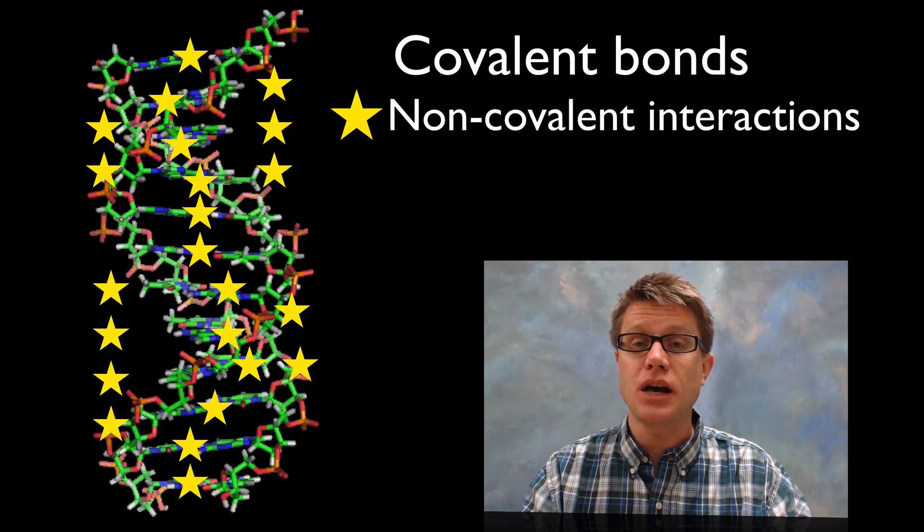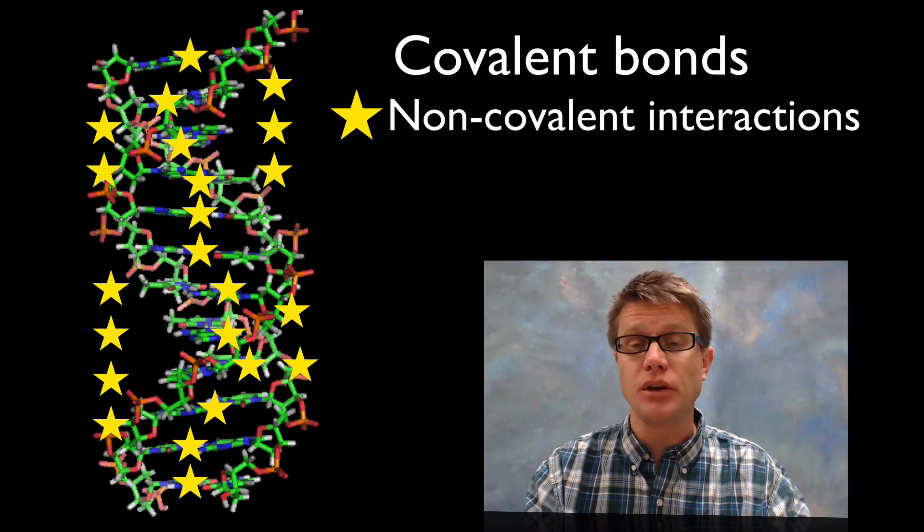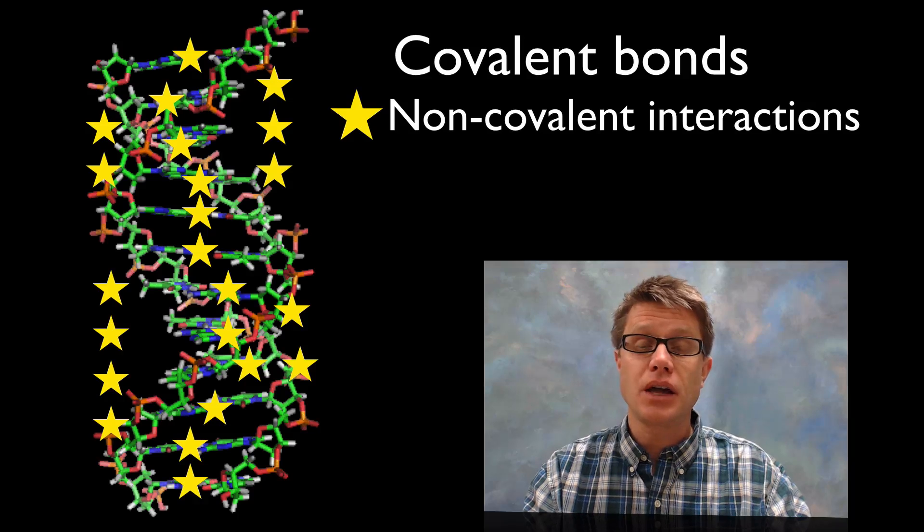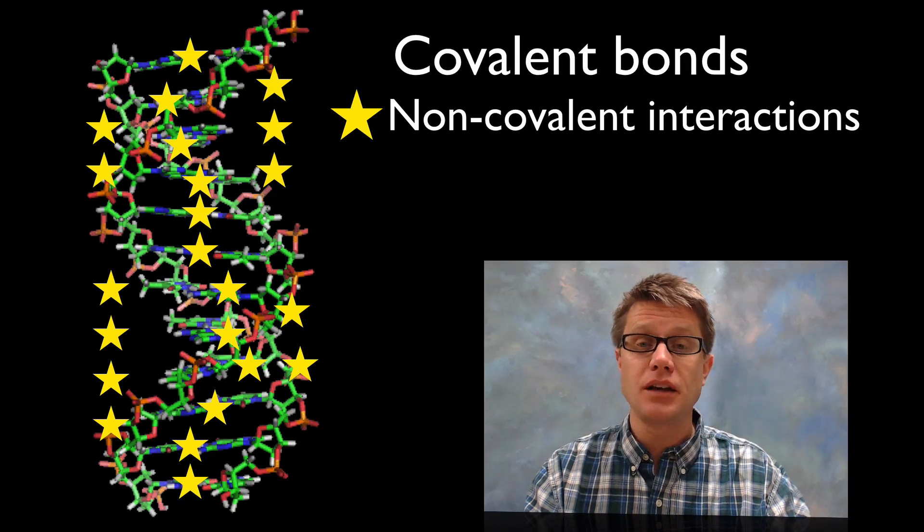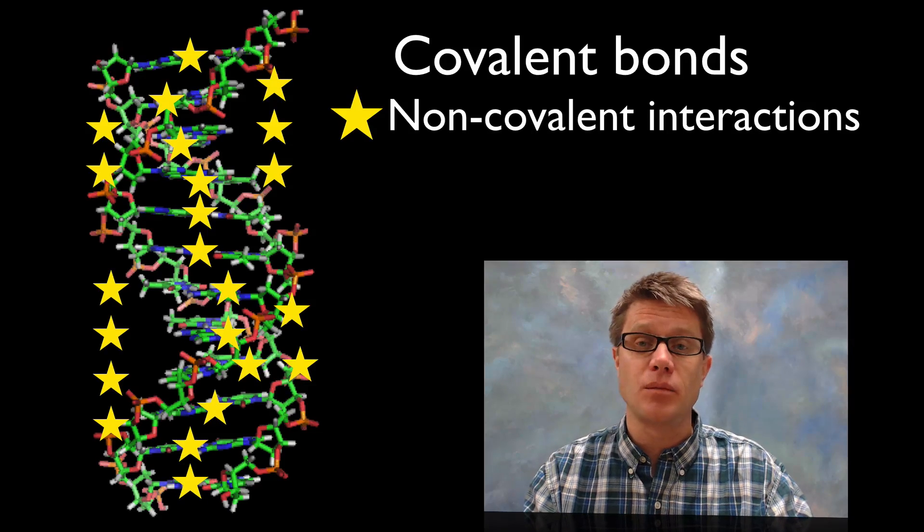And then we're going to have those hydrogen bonds on the outside that give it this stable double helix kind of a structure. And so again if we don't have both covalent and non-covalent interactions we're not going to have a molecule that works.